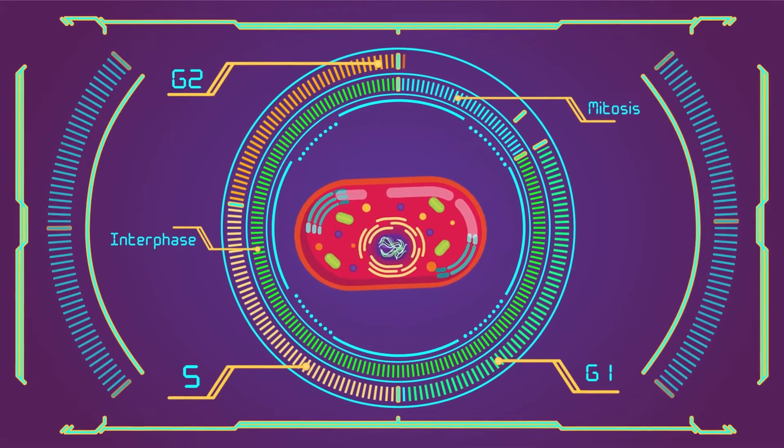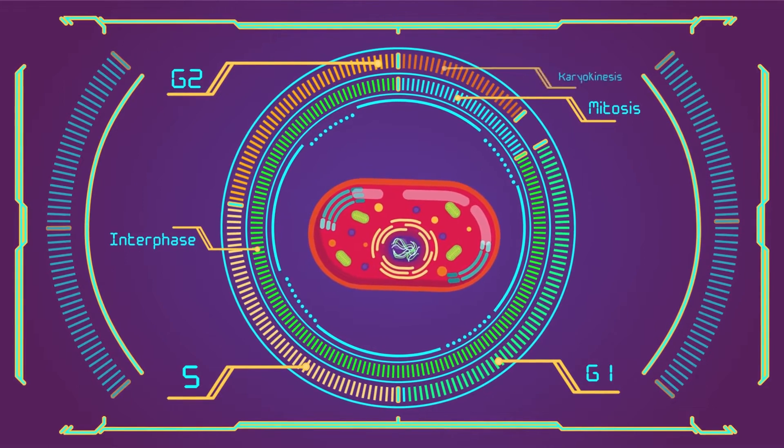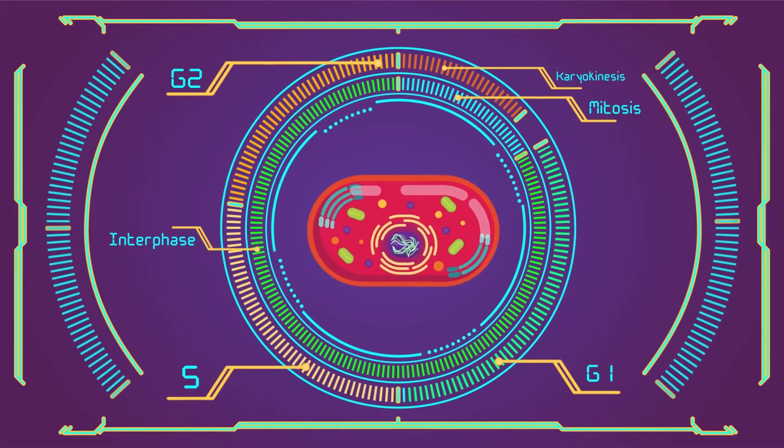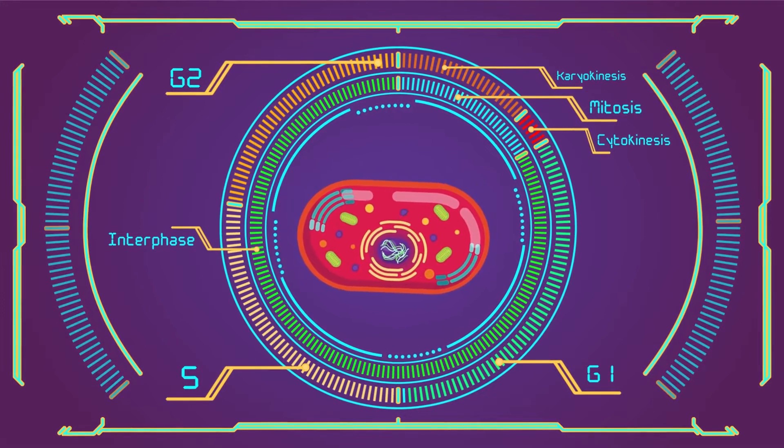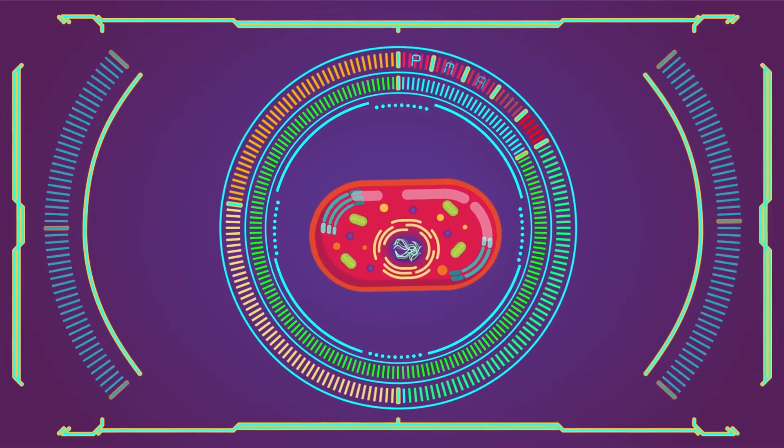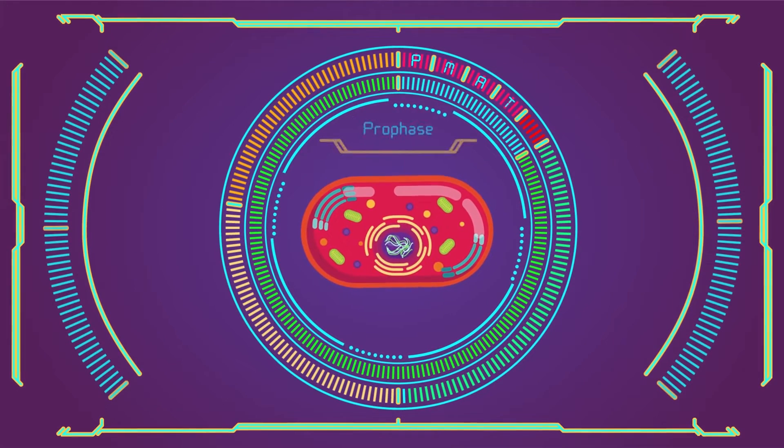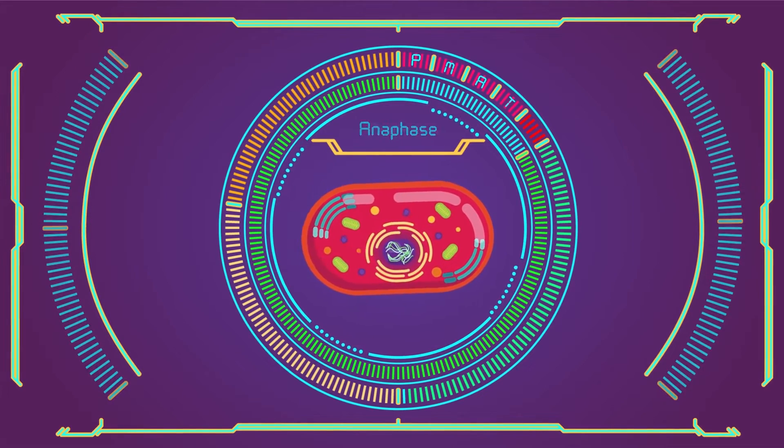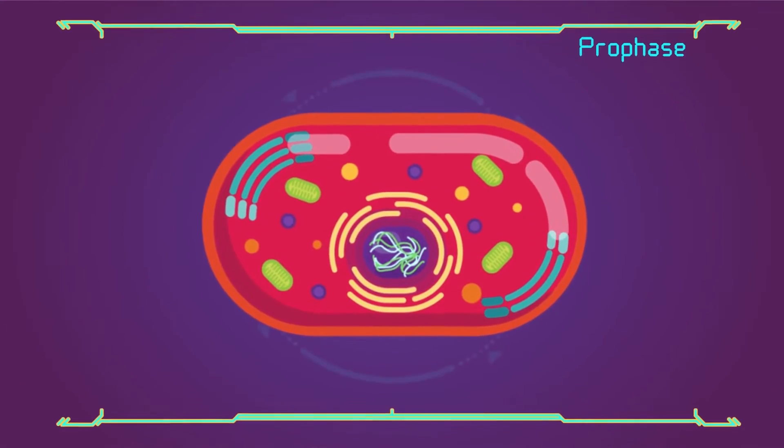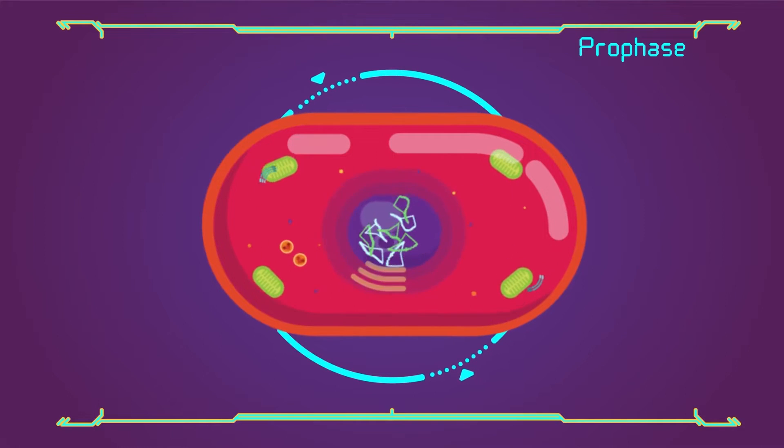After this phase comes mitosis, which is further divided into karyokinesis (division of nucleus) and cytokinesis (division of cytoplasm). Karyokinesis involves the four basic steps of mitosis: prophase, metaphase, anaphase, telophase. Here we start with prophase. The chromosomes start coiling and become condensed.